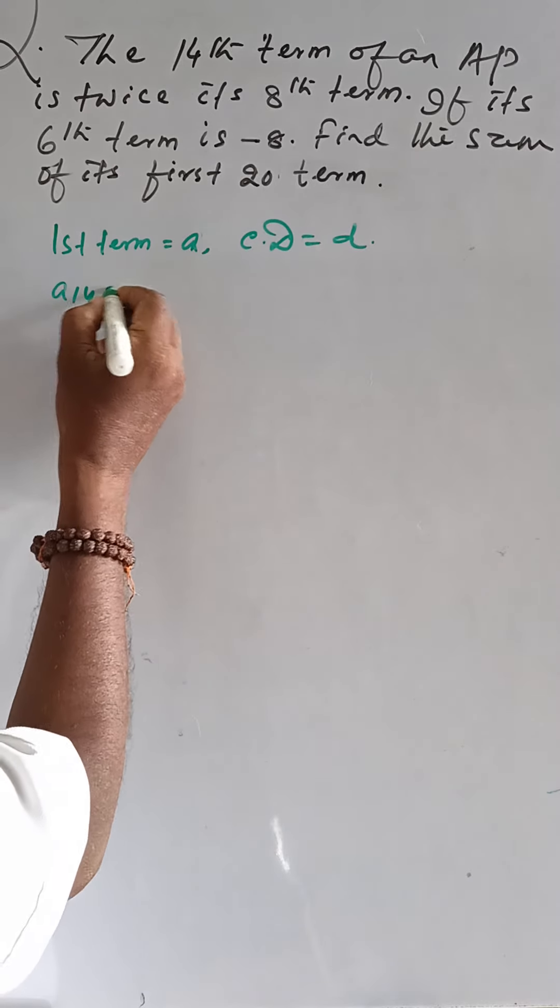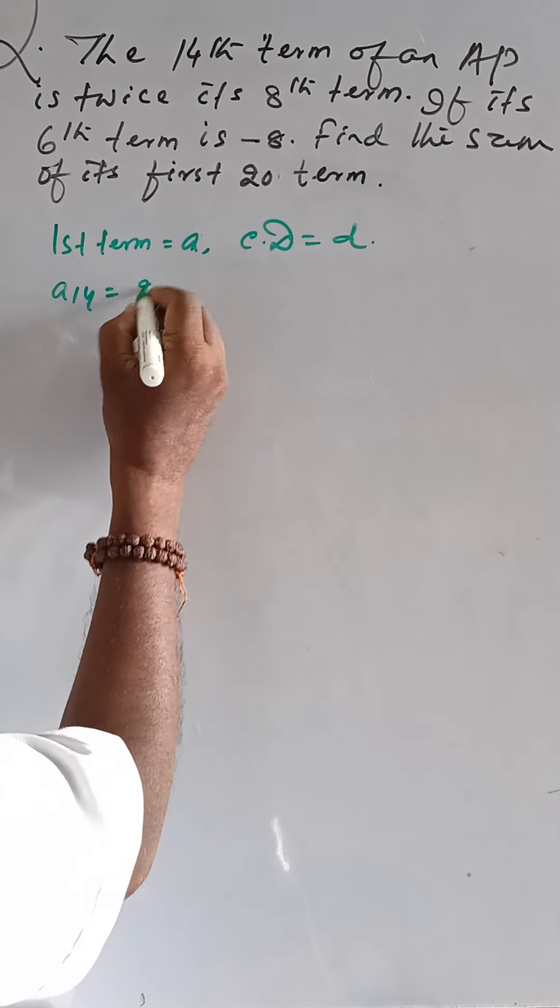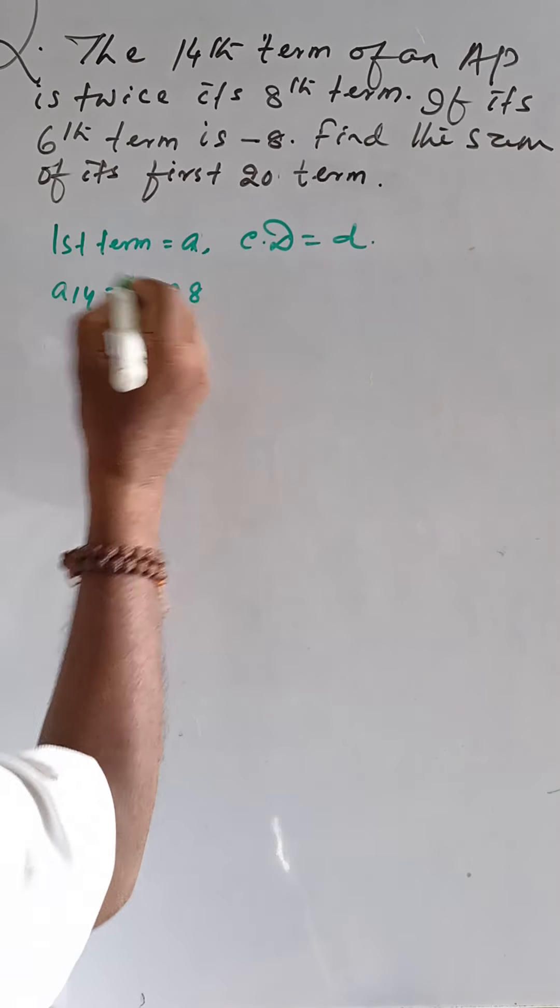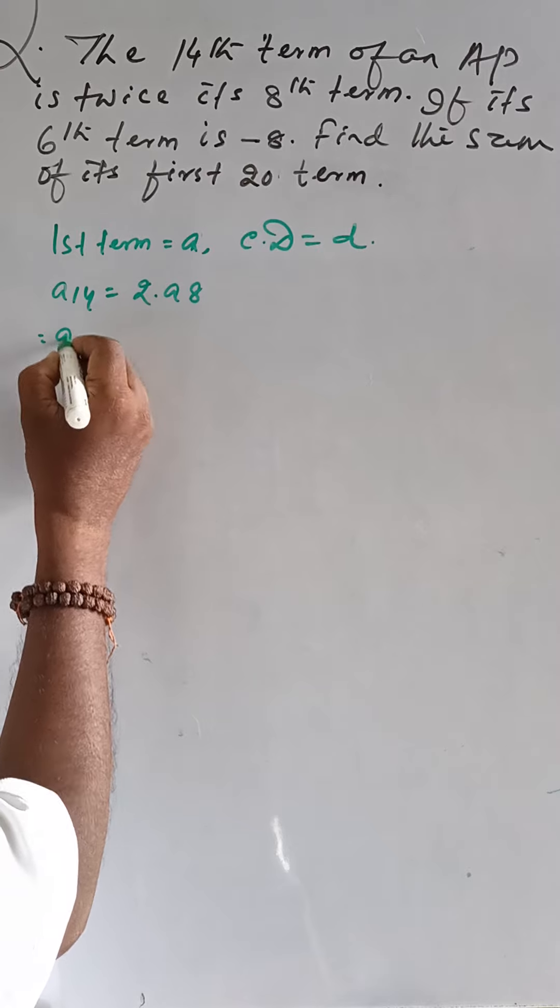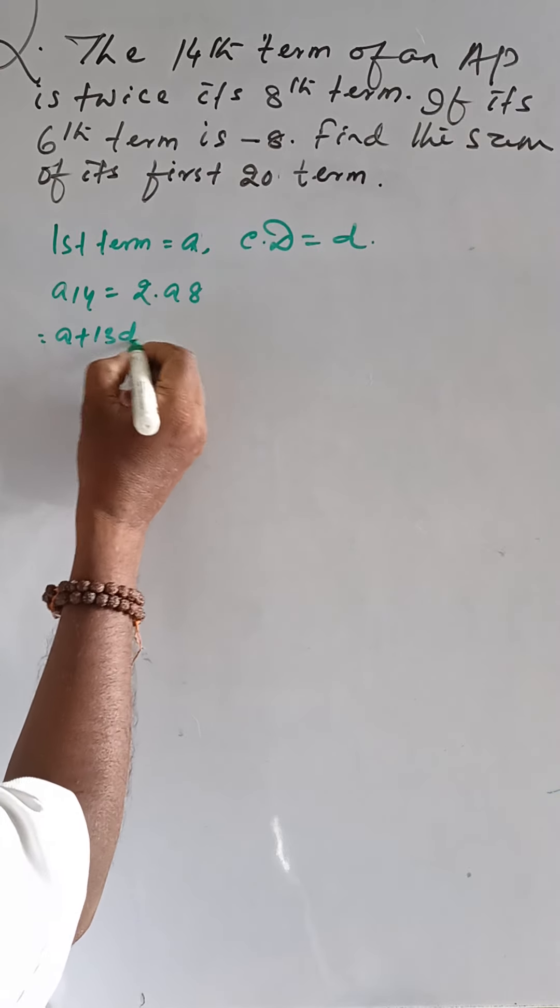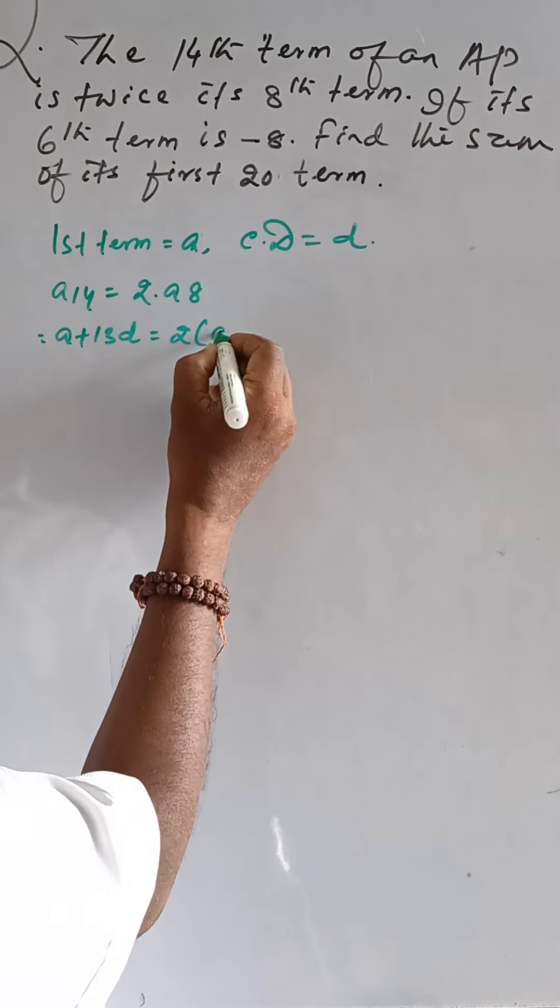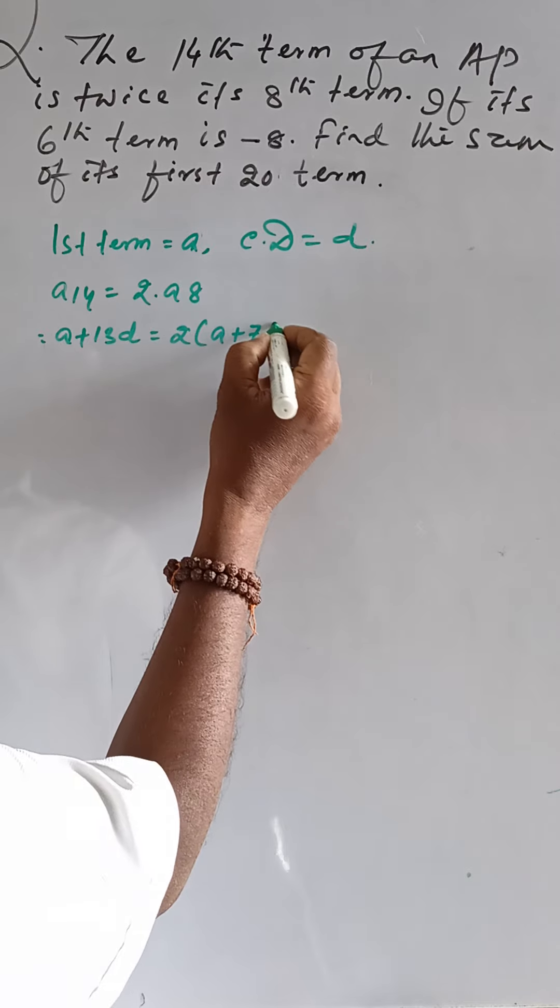A14 is equal to twice A8. That means A plus 13D is equal to 2 into A plus 7D.